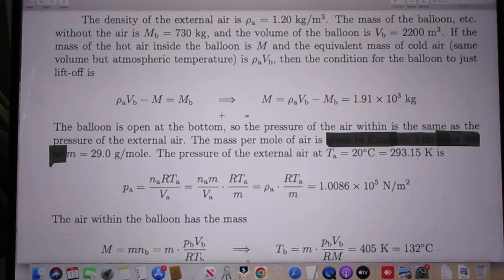The balloon is open at the bottom so that the pressure of the air within is the same as the pressure outside the balloon. The mass per mole of air is 29 grams per mole. We have covered that in earlier problems. So the pressure of the external air outside the balloon at this temperature can now be calculated using the ideal gas law. And we find this then.